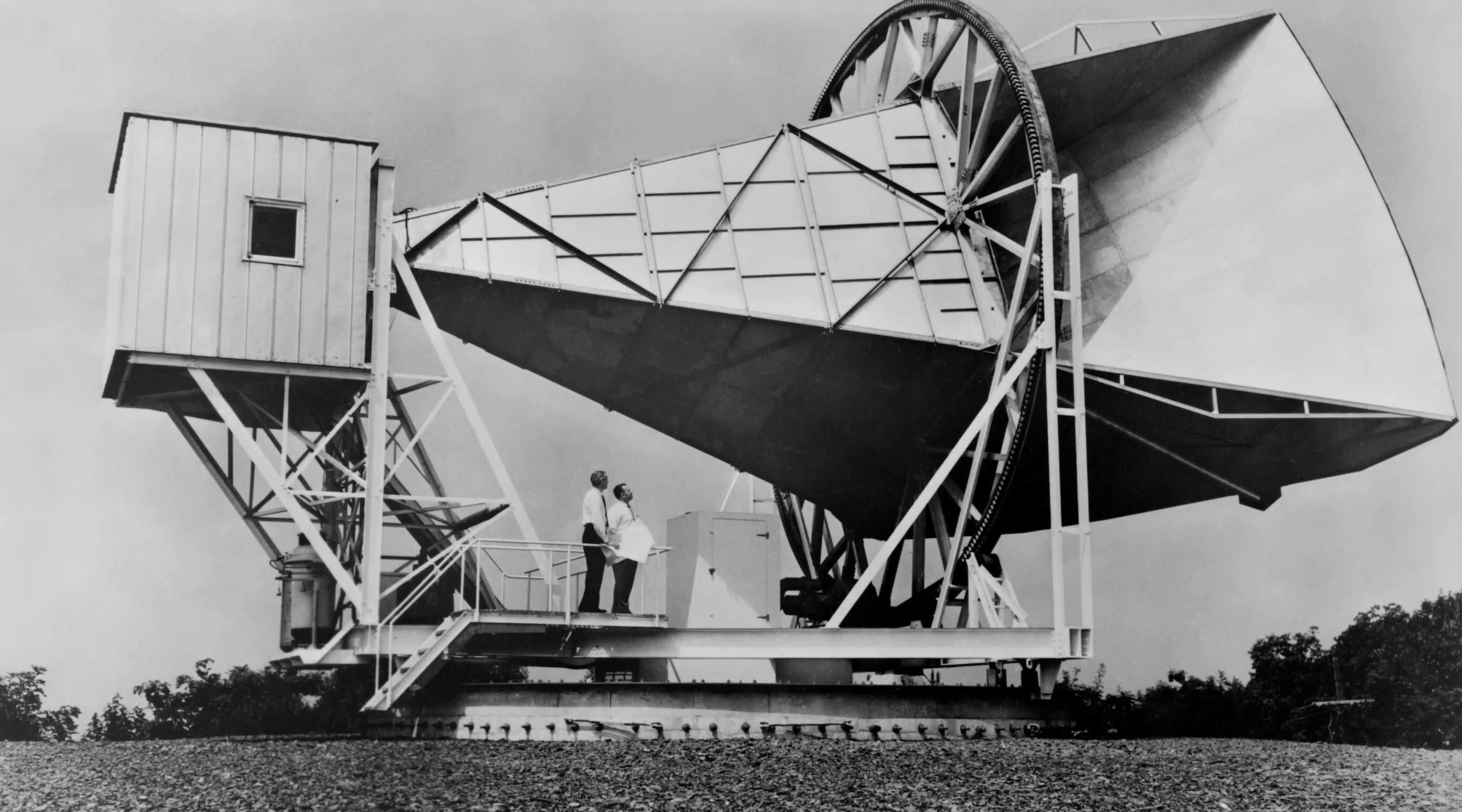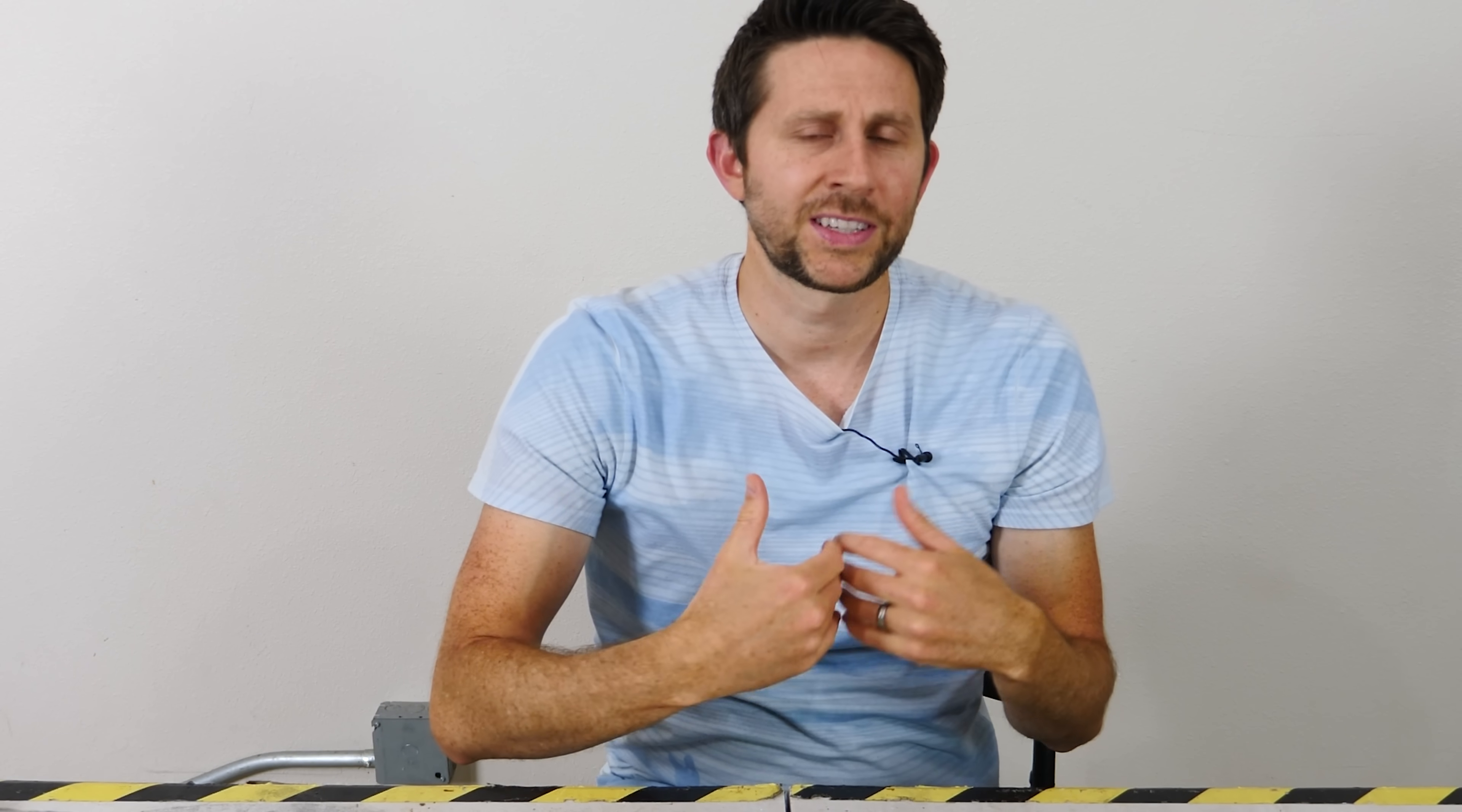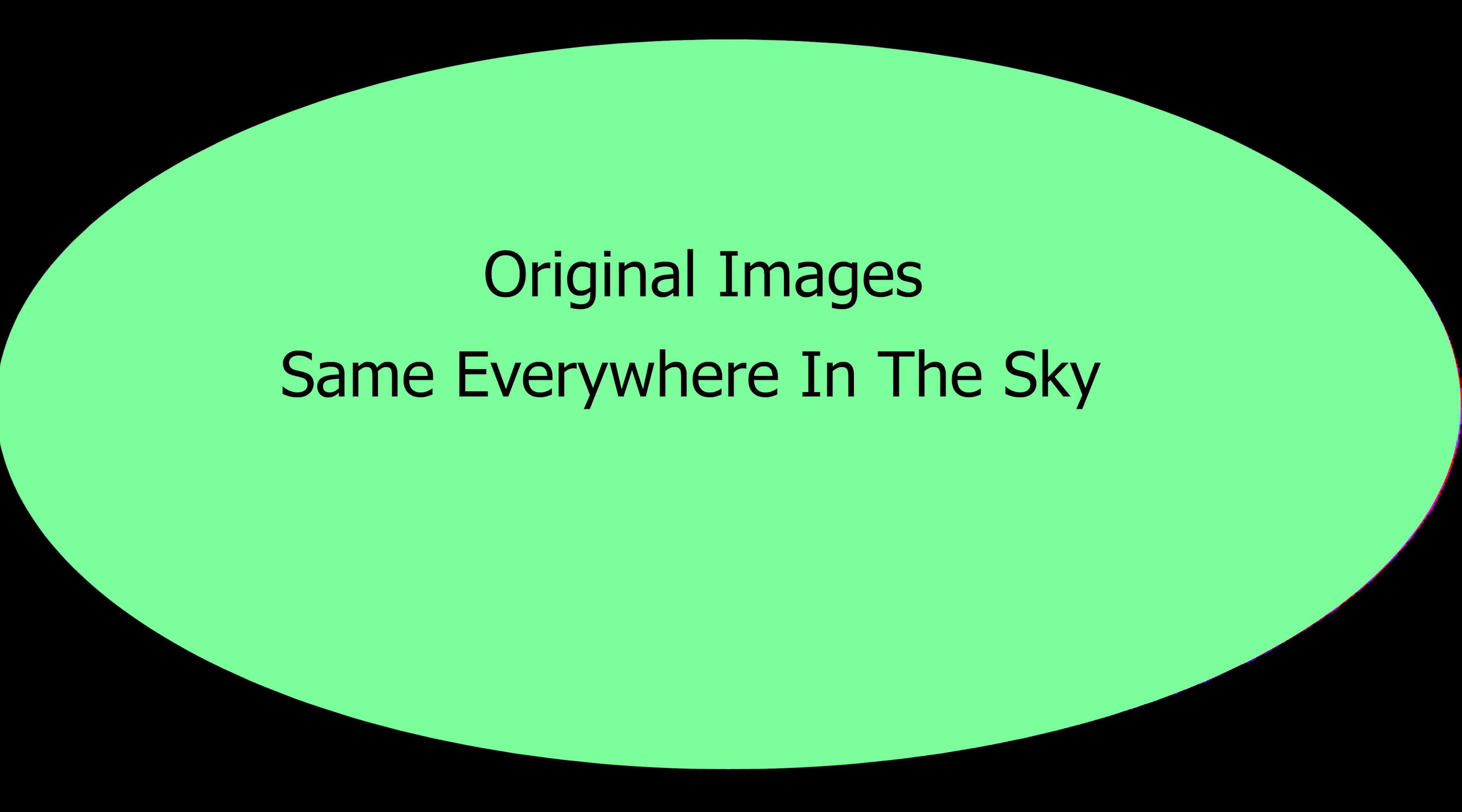When this was first discovered, scientists made telescopes that used microwaves instead of visible light and they mapped out the whole sky. So remember we're on earth looking up at the sky. If you want to map out the whole sky and lay it on a flat surface to look at, you have to do a projection like this. Initially scientists found that this cosmic microwave background radiation was completely isotropic, meaning there weren't any differences in any part of the sky that you looked at.